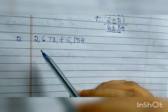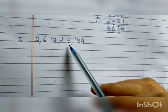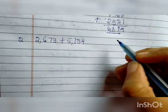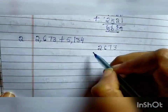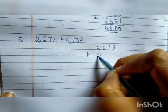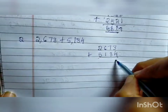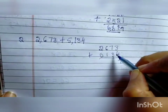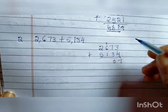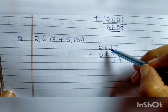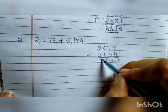Second one: 2673 plus 5134. Let us add this. 3 plus 4 is 7. 7 plus 3 is 10, so we write 0 and carry 1 to the hundreds place. 1 plus 6 is 7, 7 plus 1 is 8, and 2 plus 5 is 7. So the answer is 7,807.